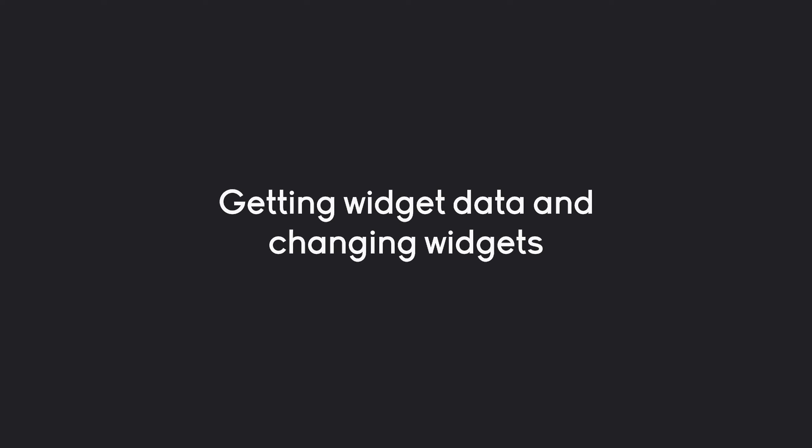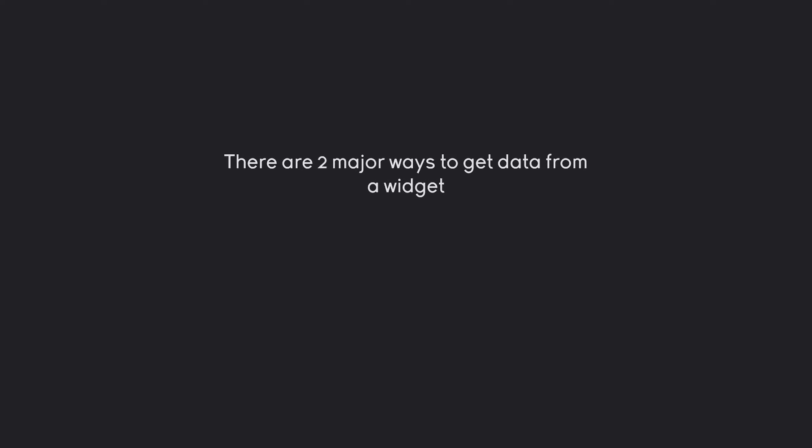So far, our app is pretty static. In this part, I want to get widget data and change widgets. For that, we have to cover a couple of things. The first part is that there are two major ways to get data from a widget. The first one is called tkinter variables — that's the one you want to use most of the time, though it's a tiny bit more advanced, so I'll cover it in the next few parts. For now, we're going to use the get method.